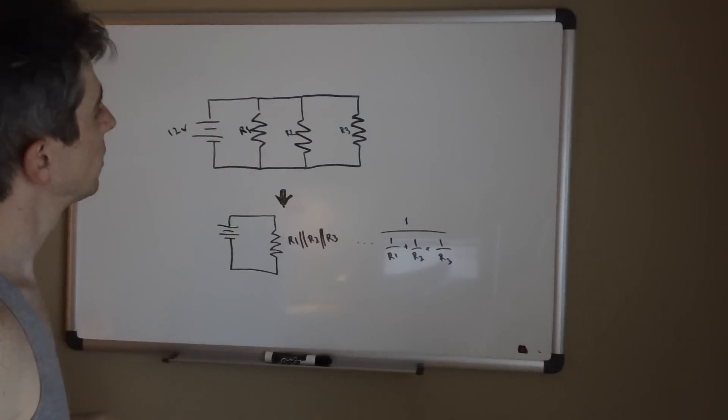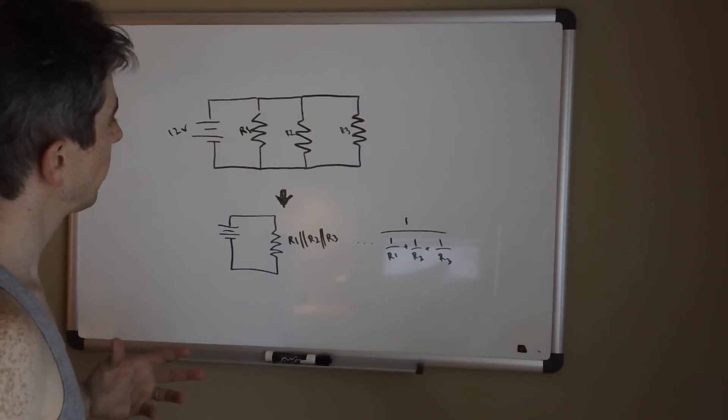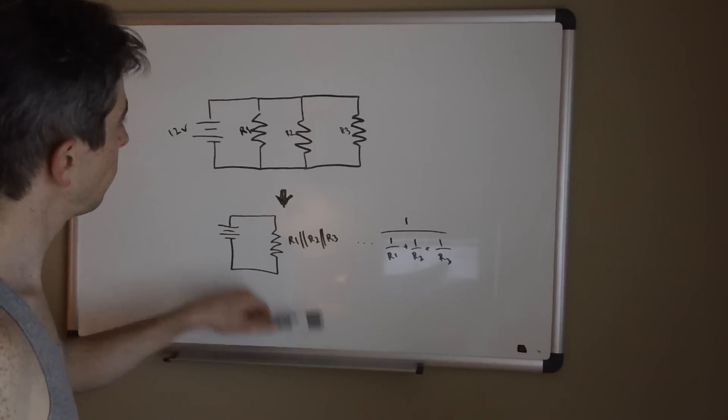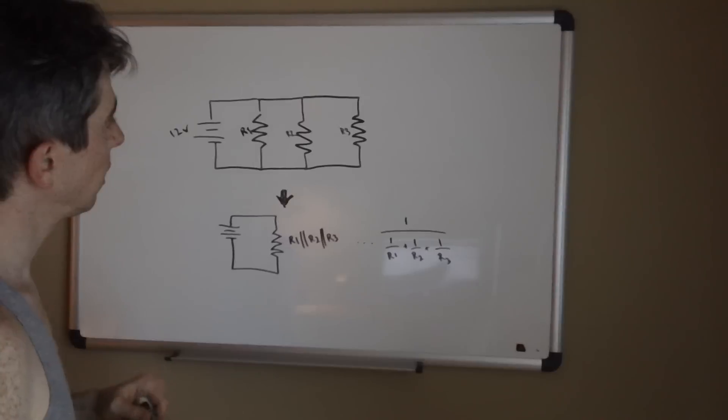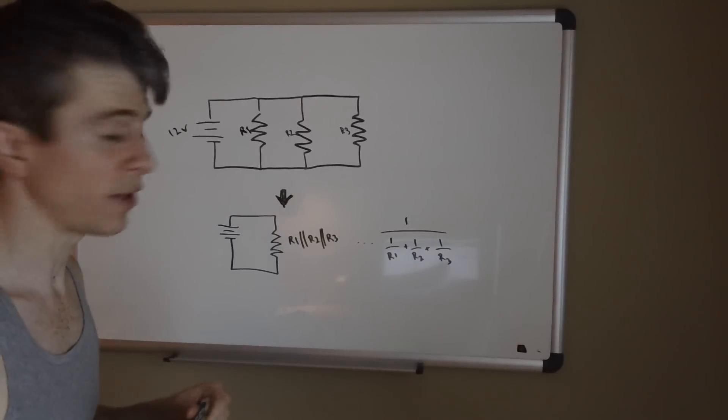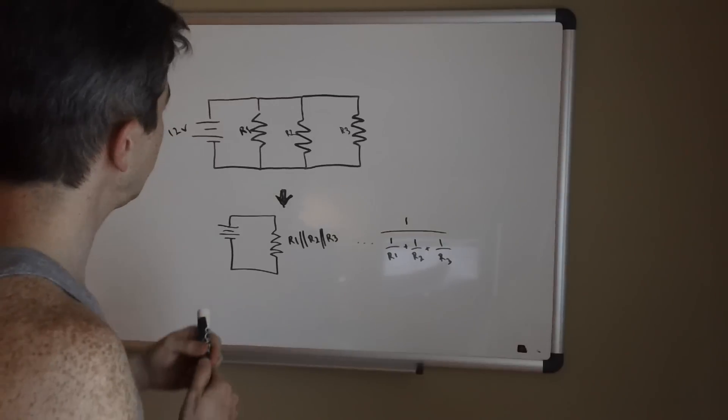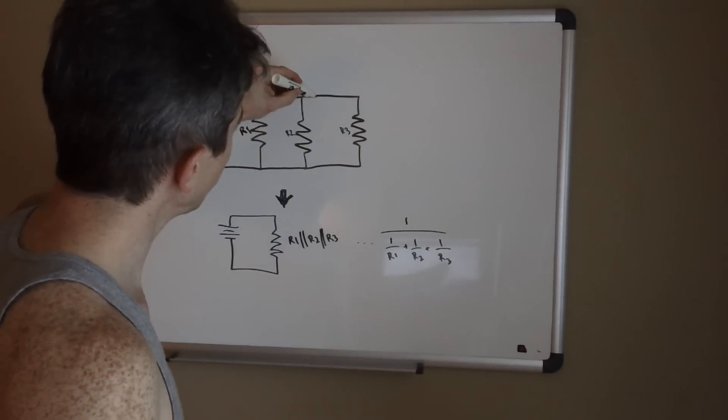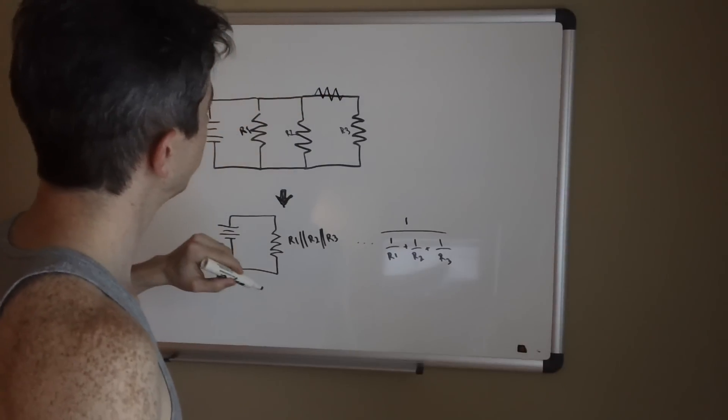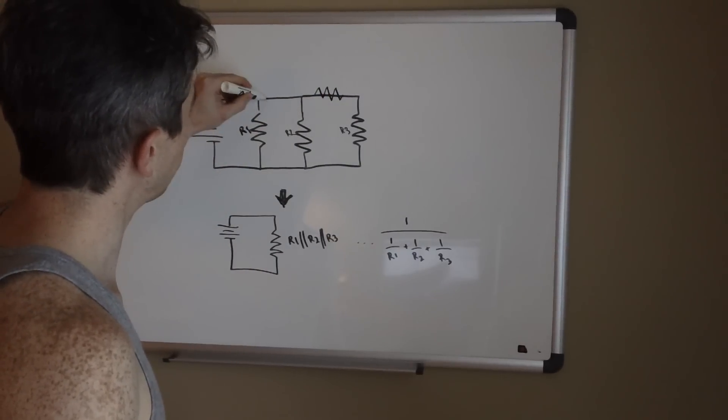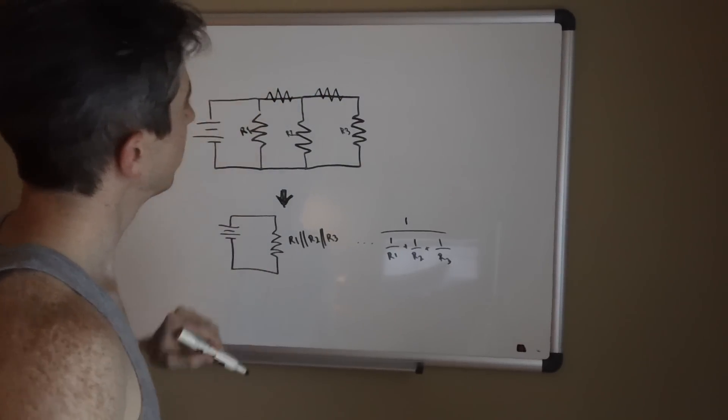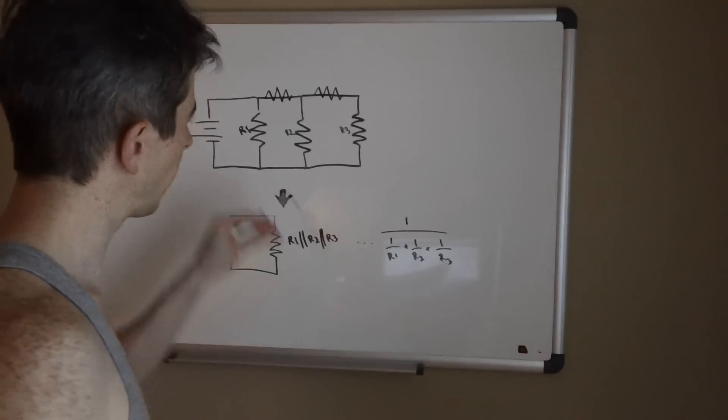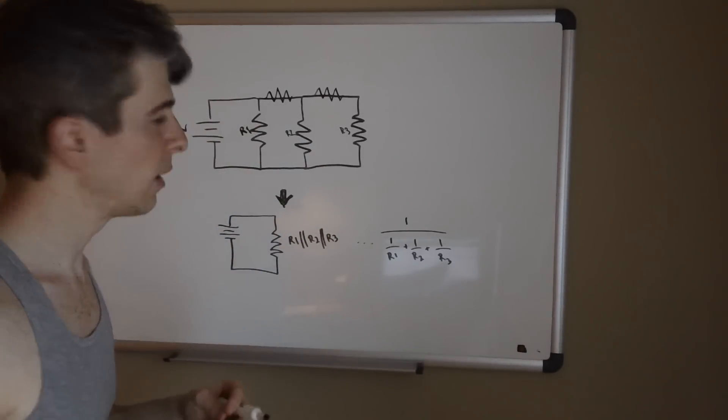So that's the basic idea of how to combine parallel branches. One of the things that gets pretty nifty is when you start adding more complexity. Say there was another resistor here and maybe another one here, and then you start to ask yourself how do you use these concepts when you have something a little bit more complicated.